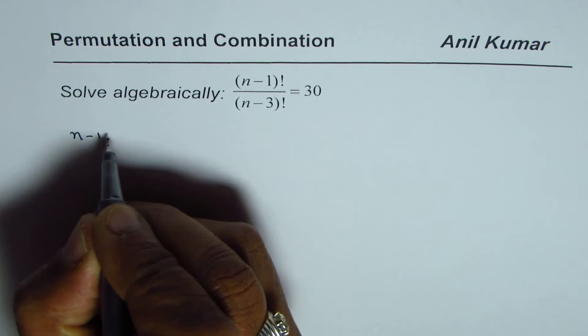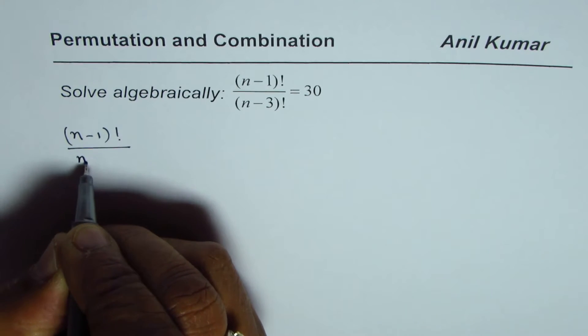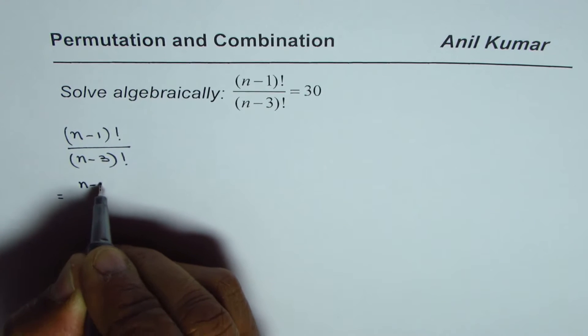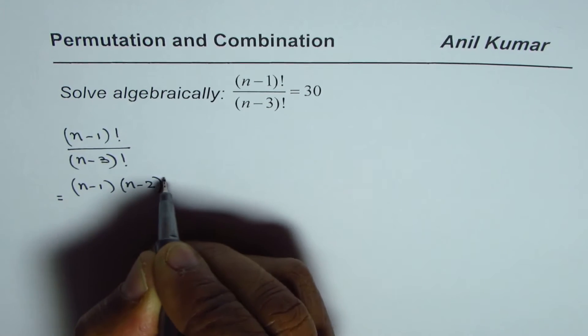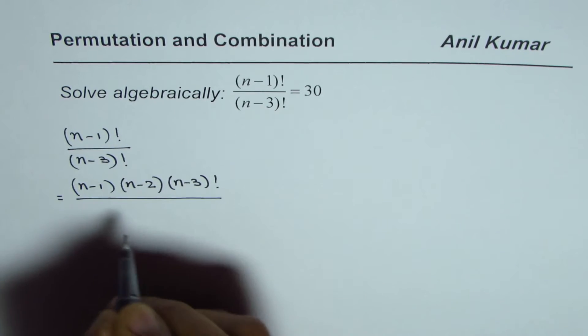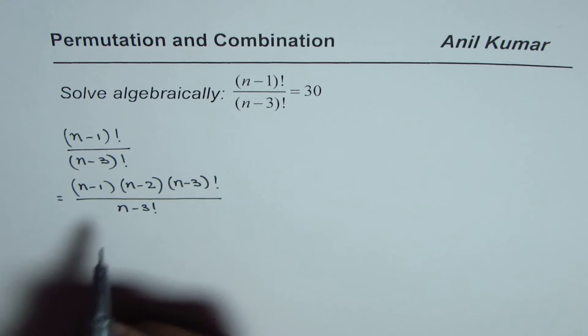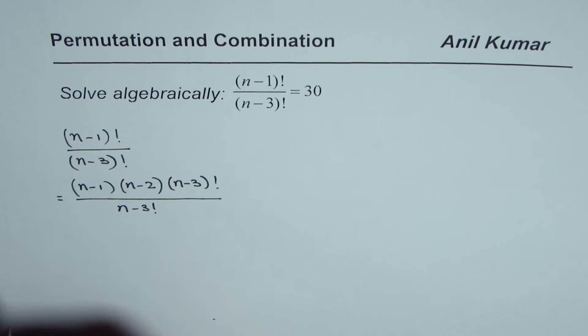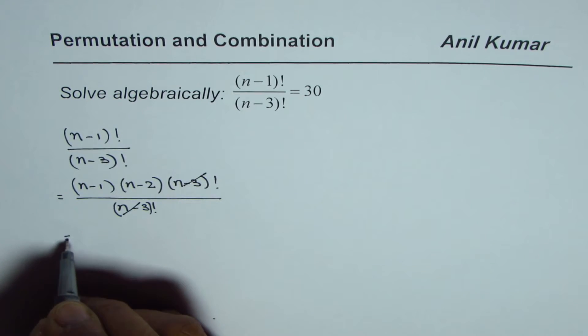We can write (n-1)! divided by (n-3)! as equal to (n-1) times (n-2) times (n-3)! divided by (n-3)!. Now (n-3)! cancels out, so we are left with (n-1) times (n-2).